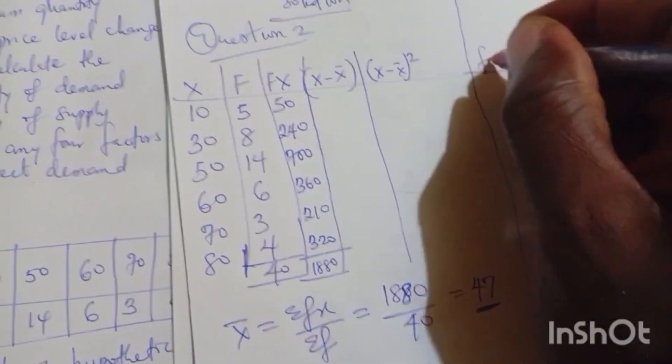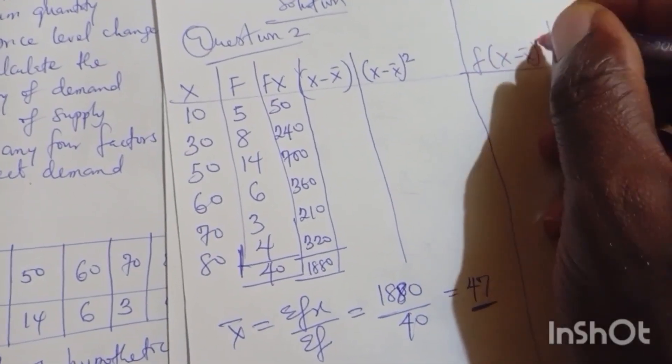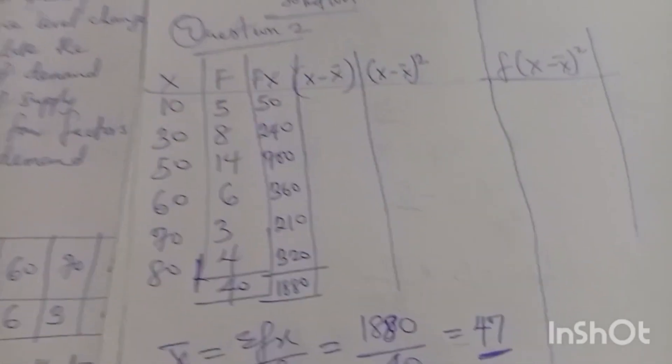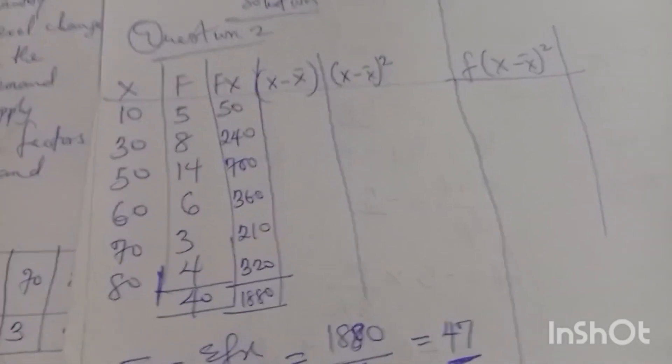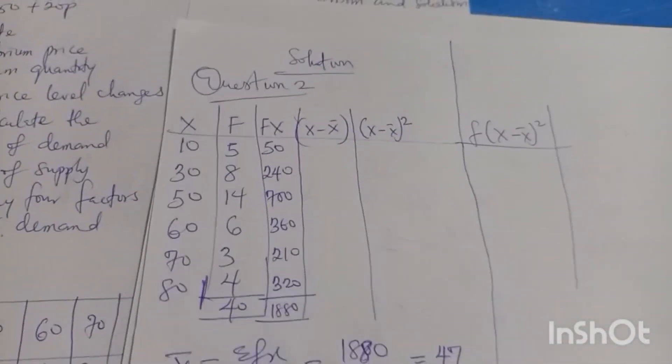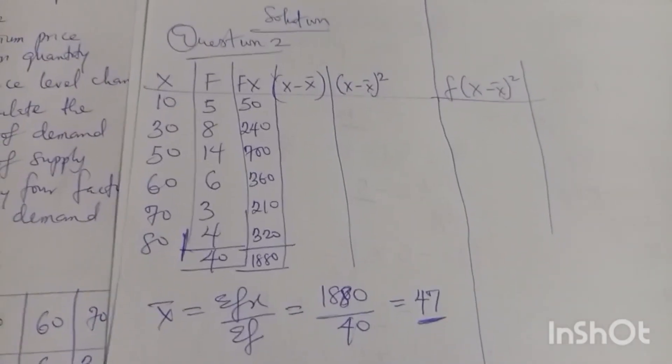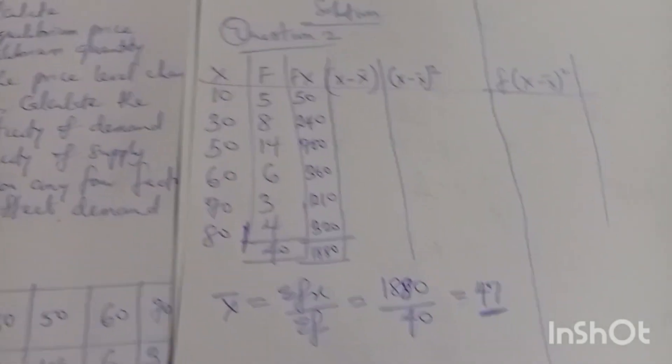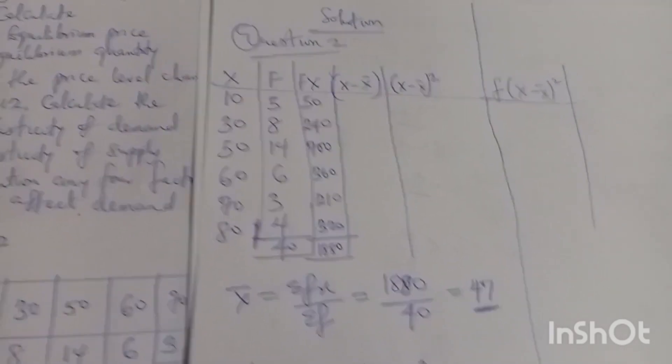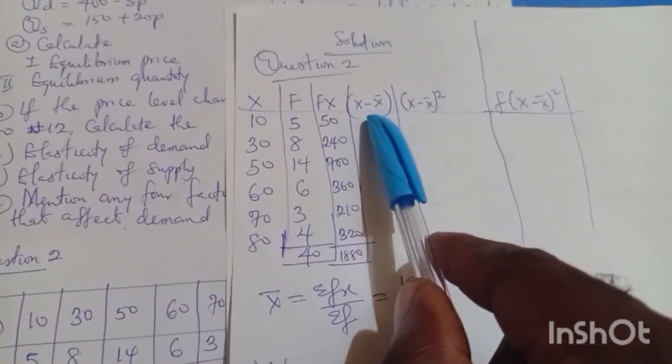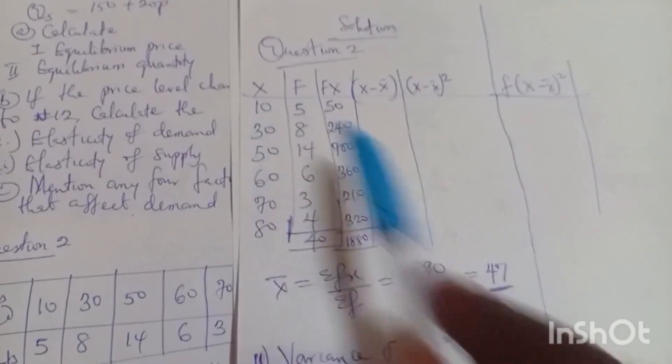I need the column for X minus mean squared, and I need the last column for F times that value. Can you see the representation? I don't just do my columns for fun. It is needed, that's why I'm doing it. We are going to do it together. I want to know if you are following me or you are only following the answer, so you need to work it out without carrying any book.